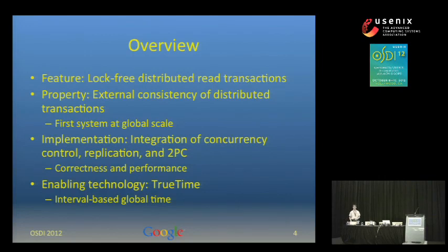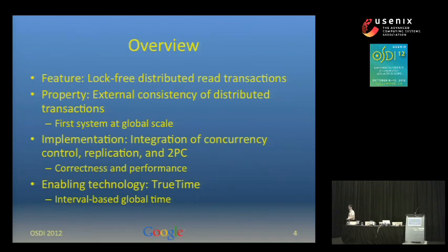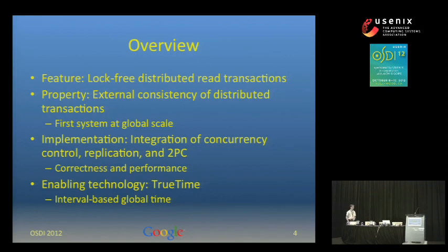I'll explain the research contribution in terms of a feature: how do you execute read-only transactions across data centers in a lock-free manner? That feature is supported by a theoretical property that Spanner provides, which is that distributed transactions are externally consistent. External consistency basically says that the commit order of transactions is the same as the order in which users actually see the transactions executing with respect to global wall clock time. Spanner is the first system to provide this property at global scale.